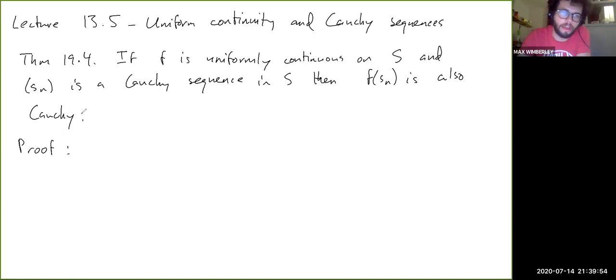So it lets us control the distance between different values of different SNs basically, right? Like SN and SM. We can control that. And if you think about it, like SN and SM, those are points in the input space. And so we know that because F is uniformly continuous, if we can control the distance between two input points, we can also control the distance between the two outputs at those points, right? So the idea is that the Cauchy criterion for SN lets us control the distance between the SNs and then controlling that distance lets us control the distance between the F of SNs basically.